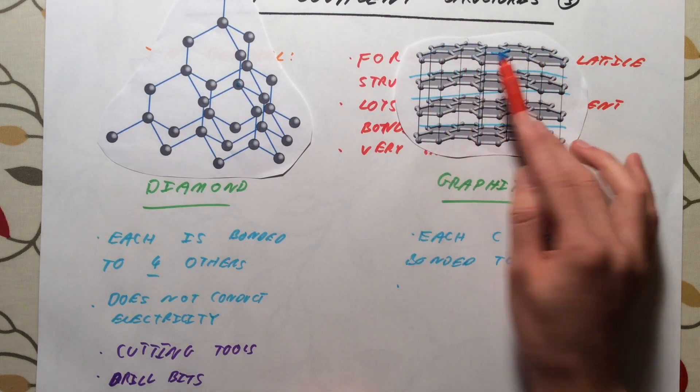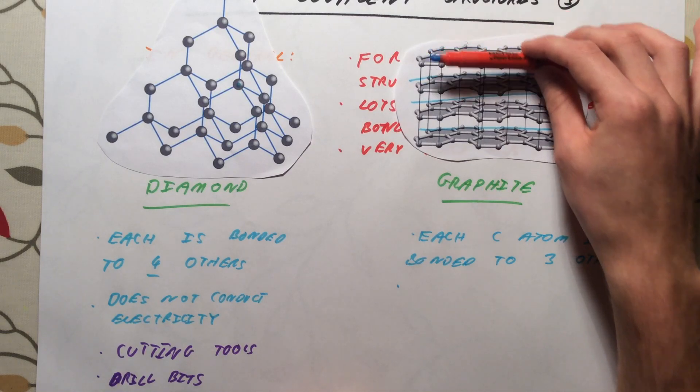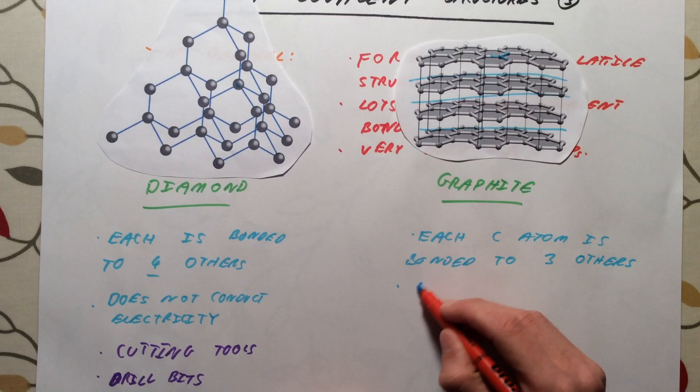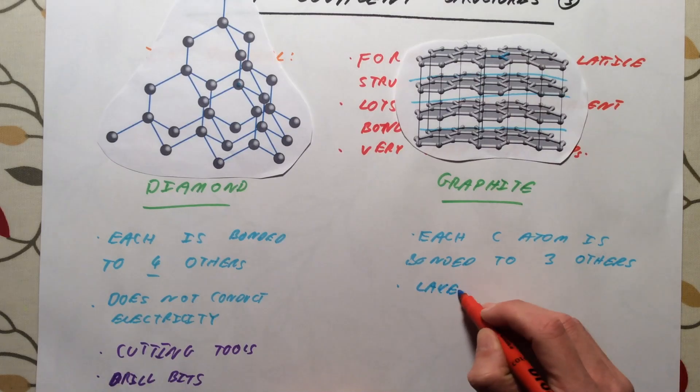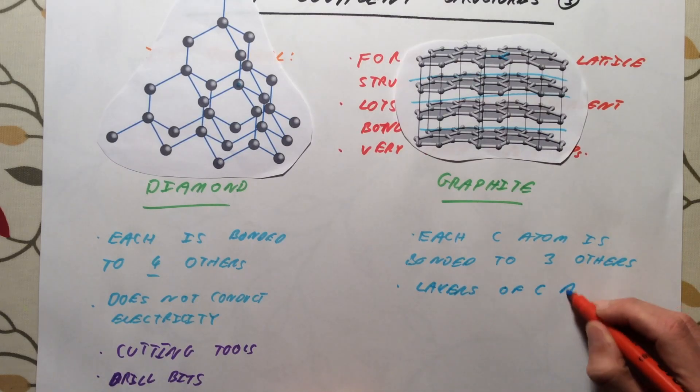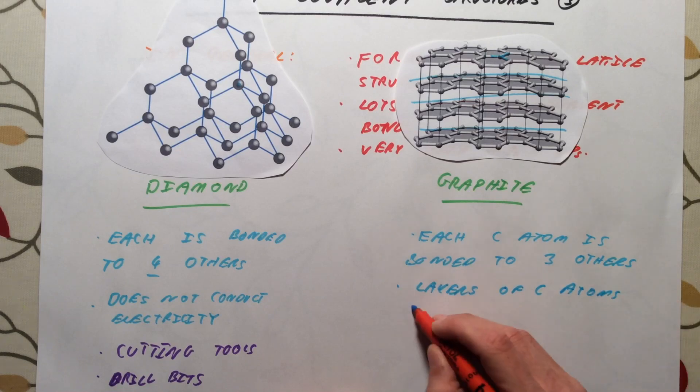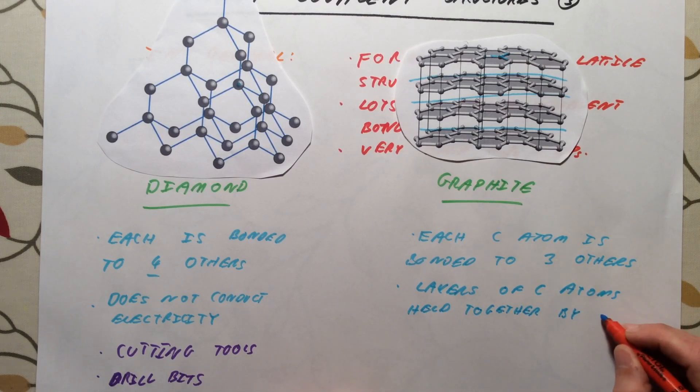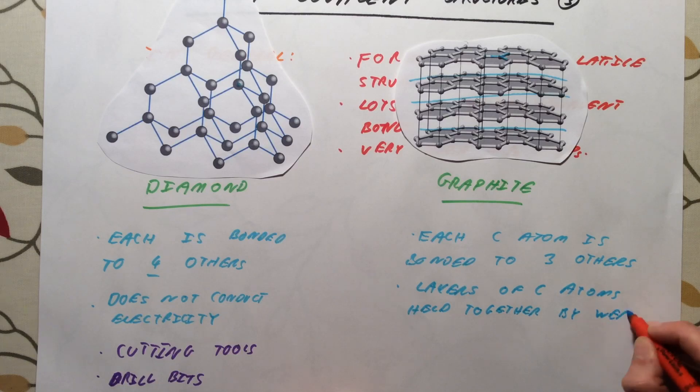These are two-dimensional sheets. Between them we actually have very weak forces holding the layers together. So we get layers or sheets of carbon atoms which are held together by much weaker forces.